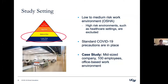We investigated these screening tools in the following study setting: OSHA defines four risk levels for COVID-19 exposure, and most American workers fall into lower or medium risk categories, which is where our analysis focuses — including office spaces, manufacturing, industrial facilities, and some retail environments. Our analysis assumes standard COVID-19 precautions are in place: personal protective equipment and six feet of social distancing. For this presentation, I'll focus on a case study of a mid-sized company with 100 employees whose work is office-based.